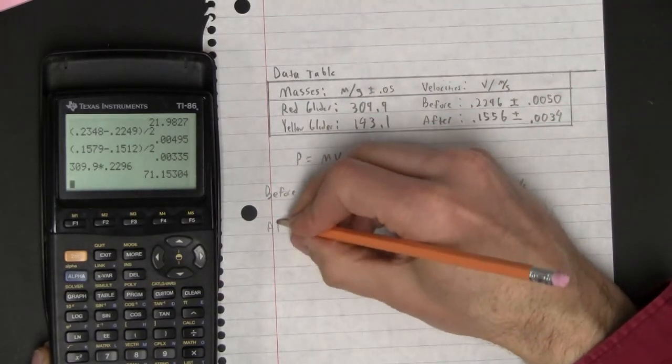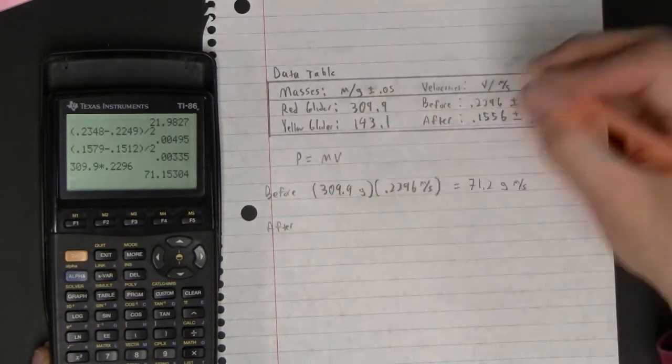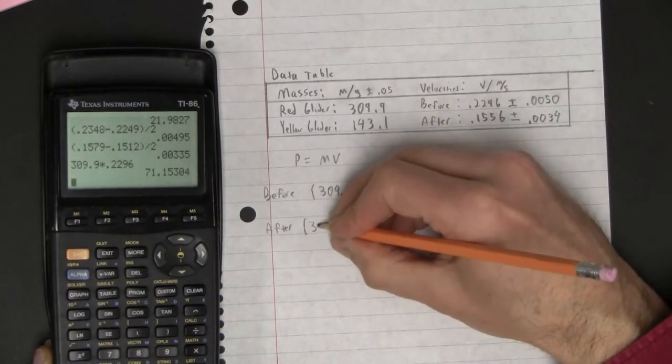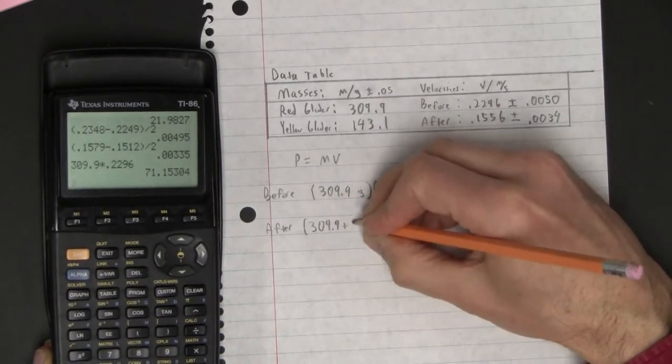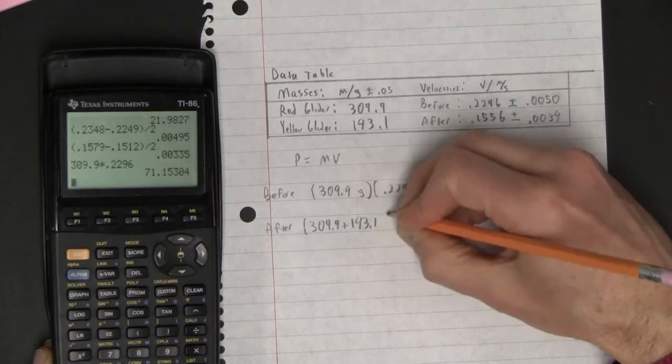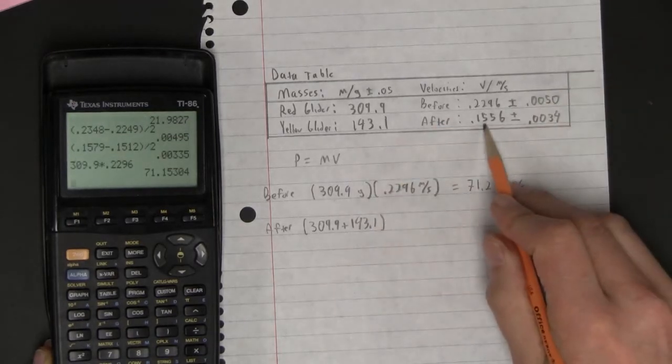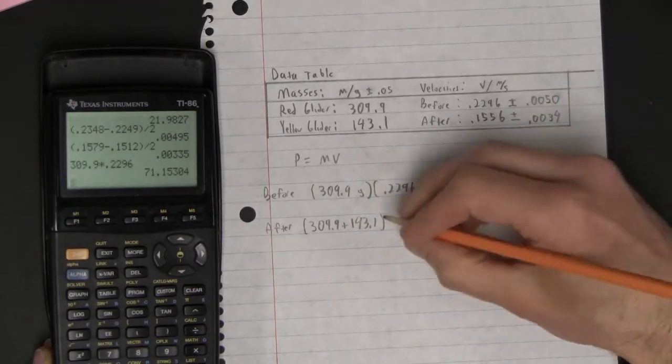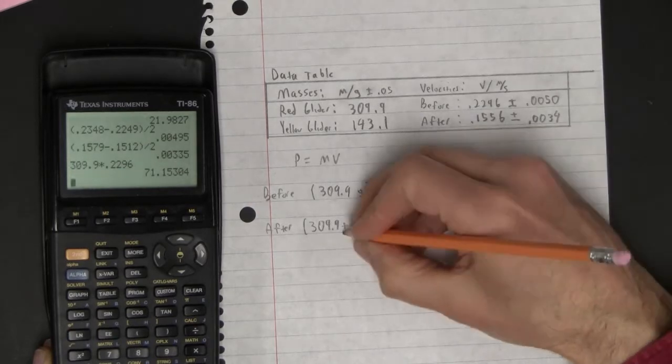And then after, it's going to be both masses. So 309.9 plus 143.1, and then the after velocity is .1556. These are grams.